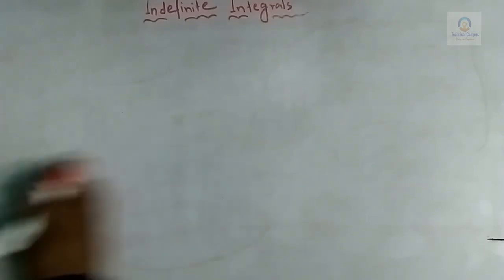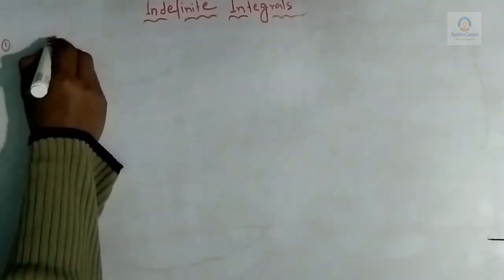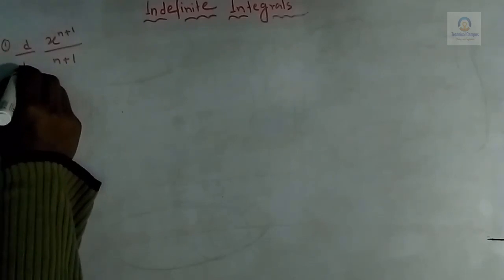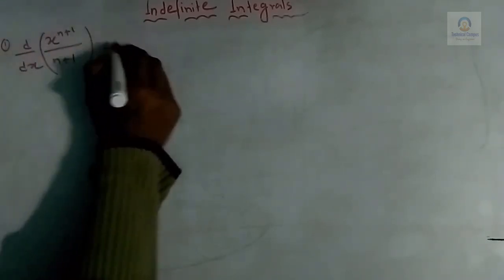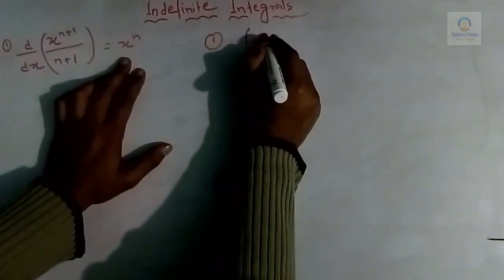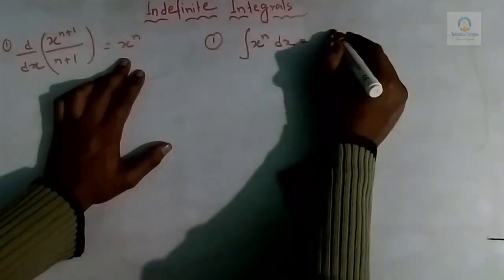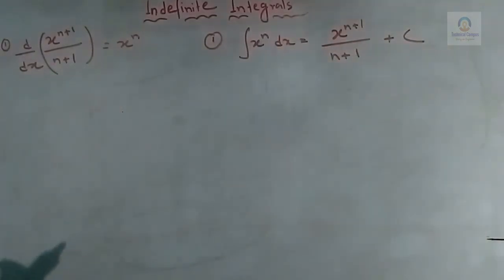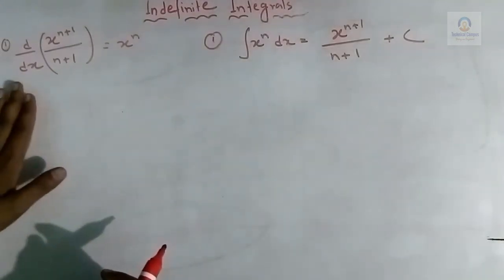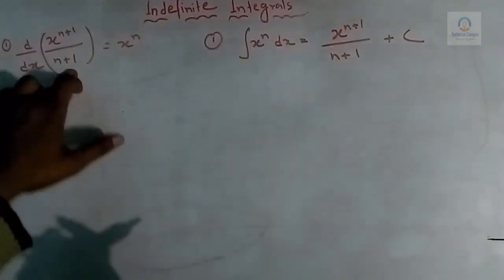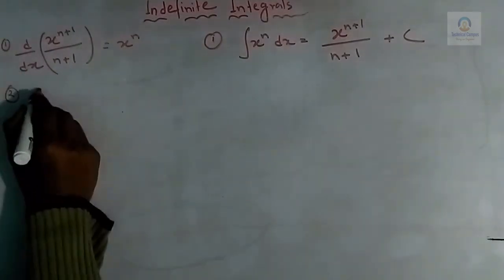Since we have already studied differentiation, we can understand integration easily. Let us learn differentiation and integration side by side. Suppose we have x^(n+1)/(n+1). Differentiating this with respect to x gives x^n. The same way, if we integrate x^n dx, the result is x^(n+1)/(n+1) plus constant C. The opposite of differentiation is integration, so differentiating gives x^n and integrating x^n gives x^(n+1)/(n+1) + C.